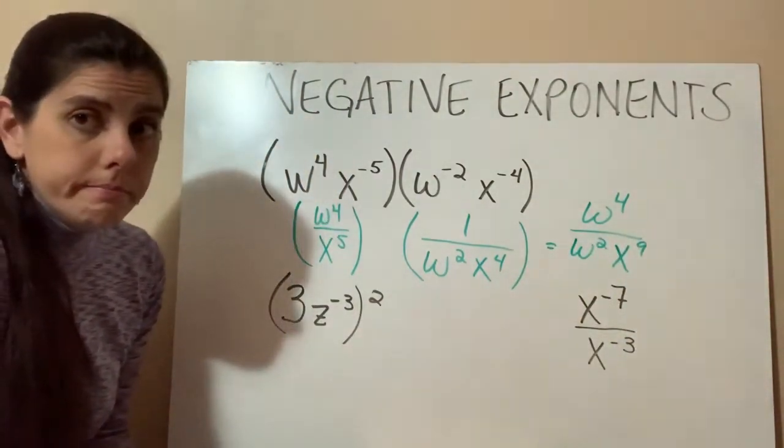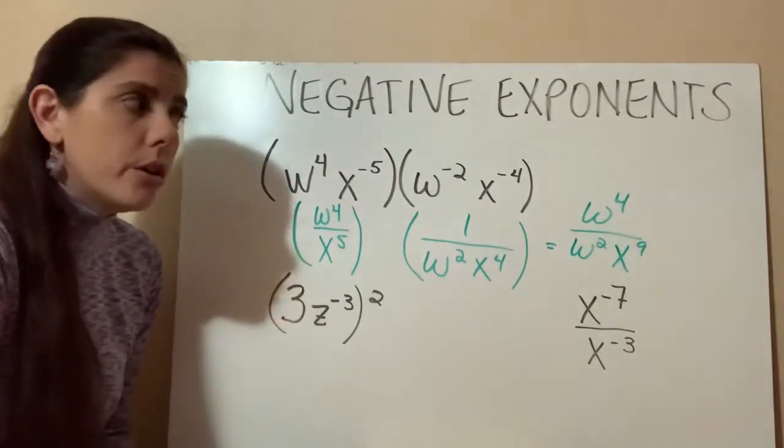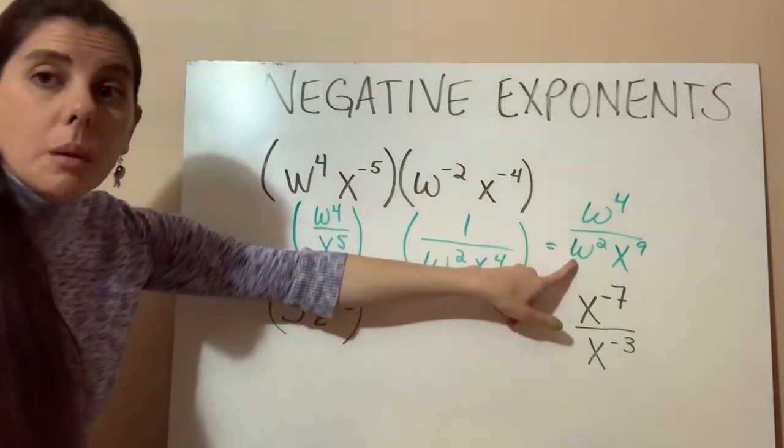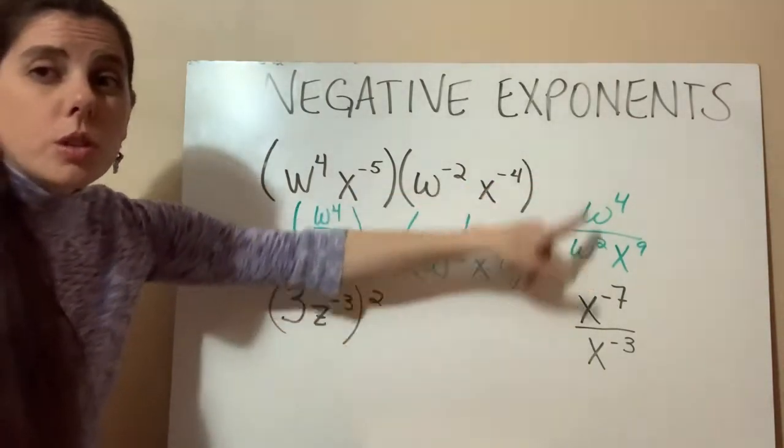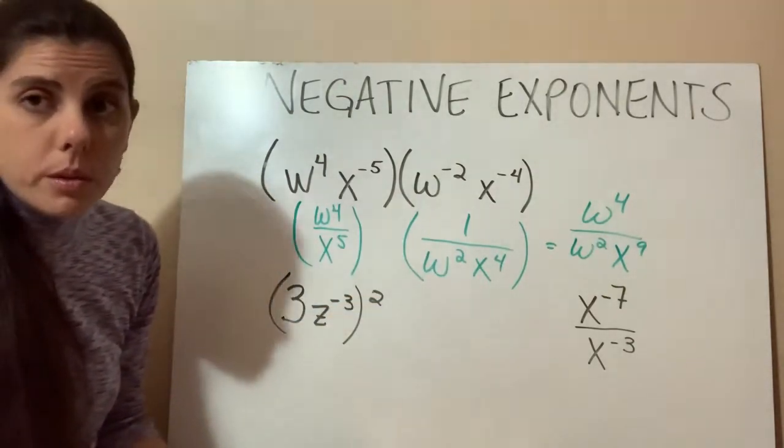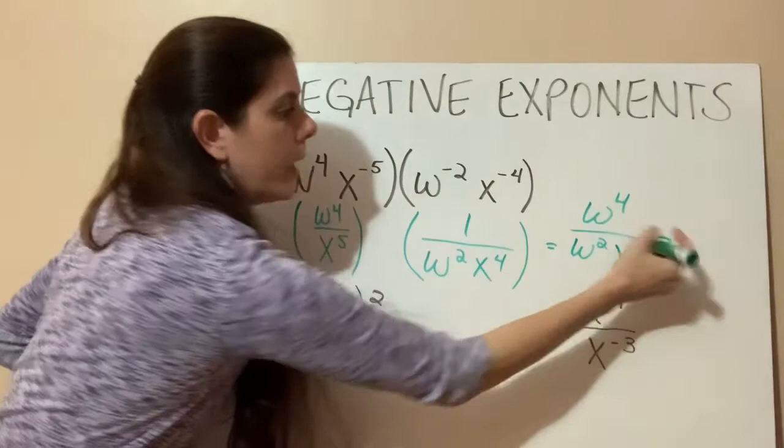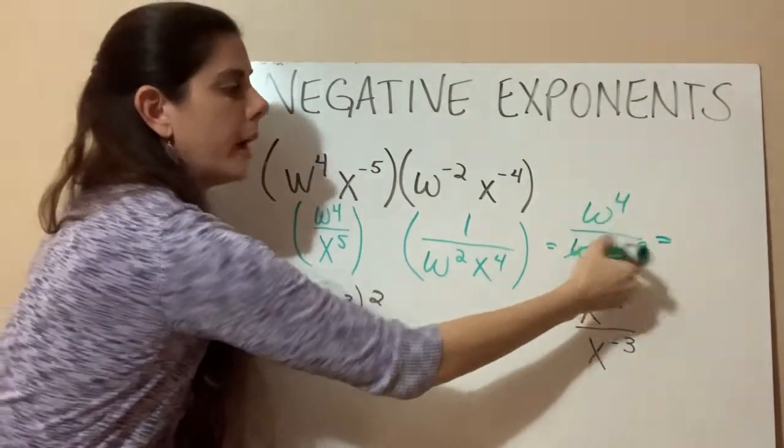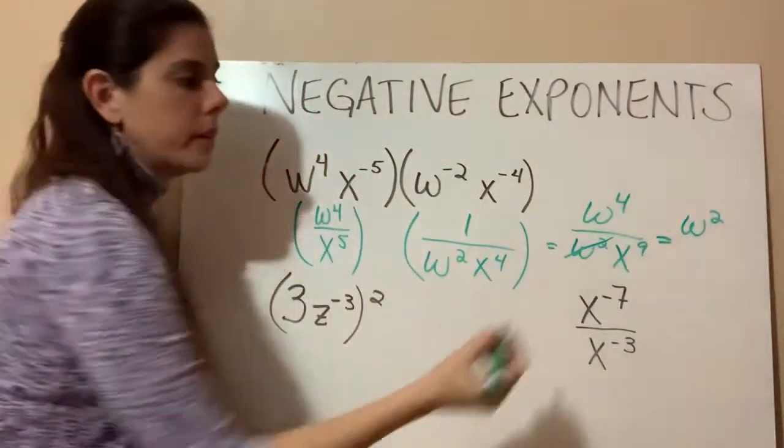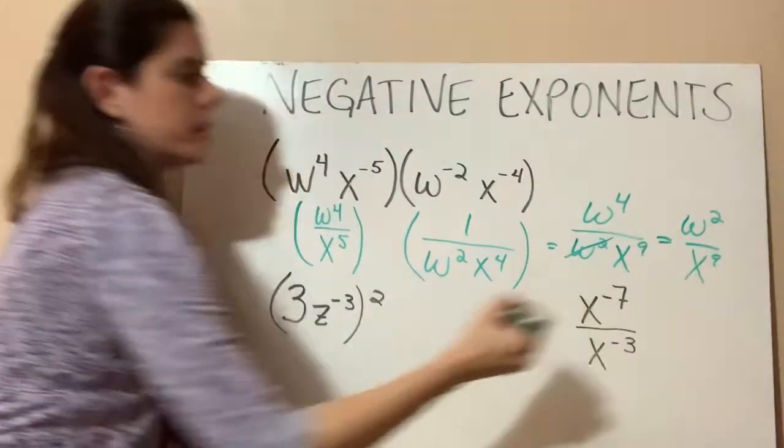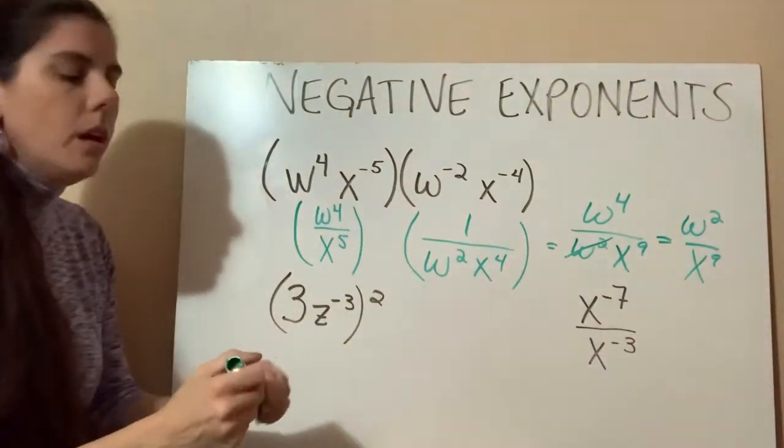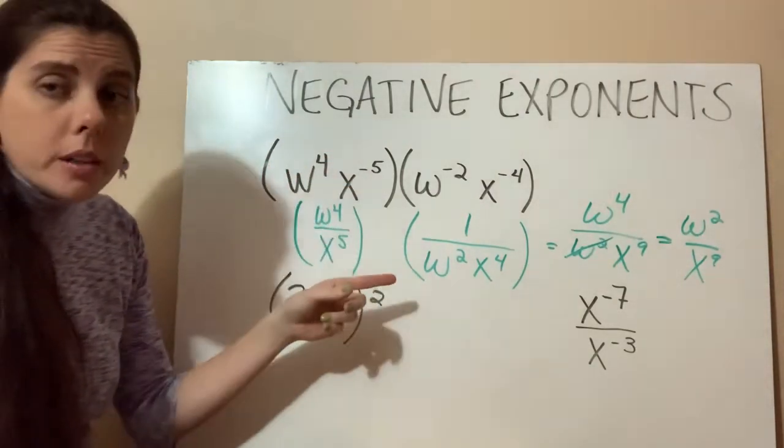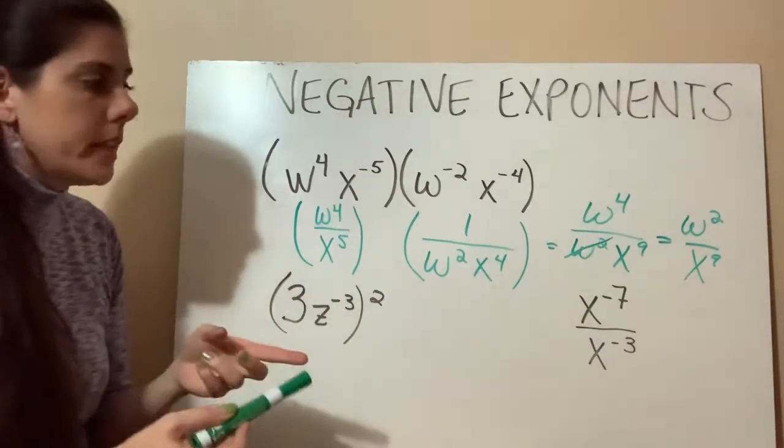Are we done? What do you think? No, because we can still use the quotient rule here. We have a w to the 4th and a w squared. So we can use the quotient rule to cancel out a couple of those w's, correct? So we have 4 w's on top and 2 w's on the bottom. 4 minus 2 is going to leave us with 2 w's on the top and then our 9 x's on the bottom. So again, we're using negative exponents, our product rule, and our quotient rule all in the same problem.